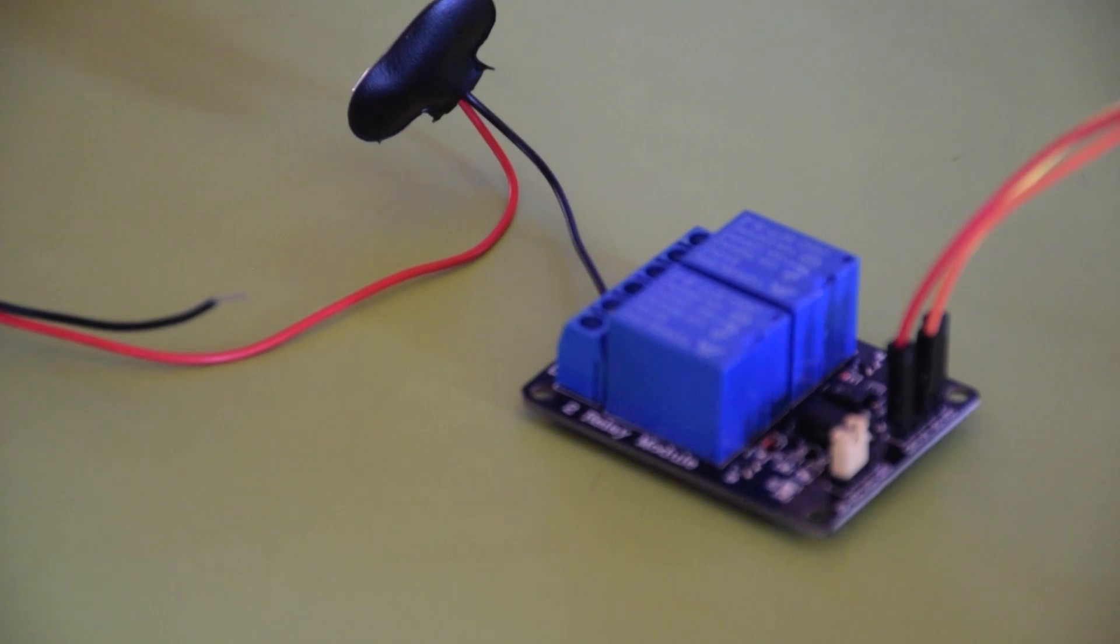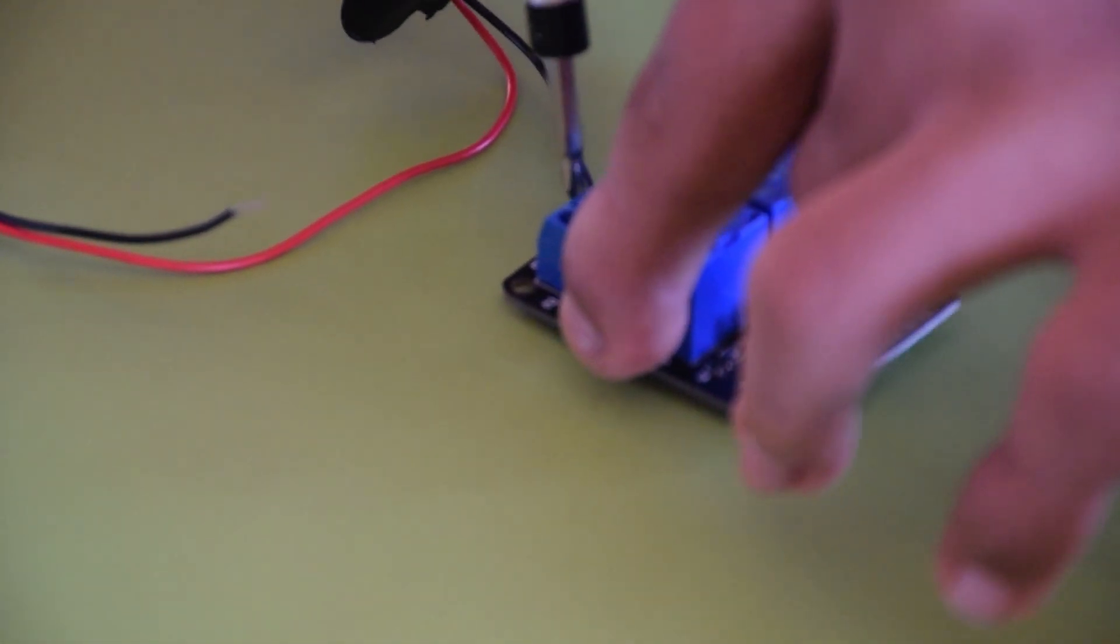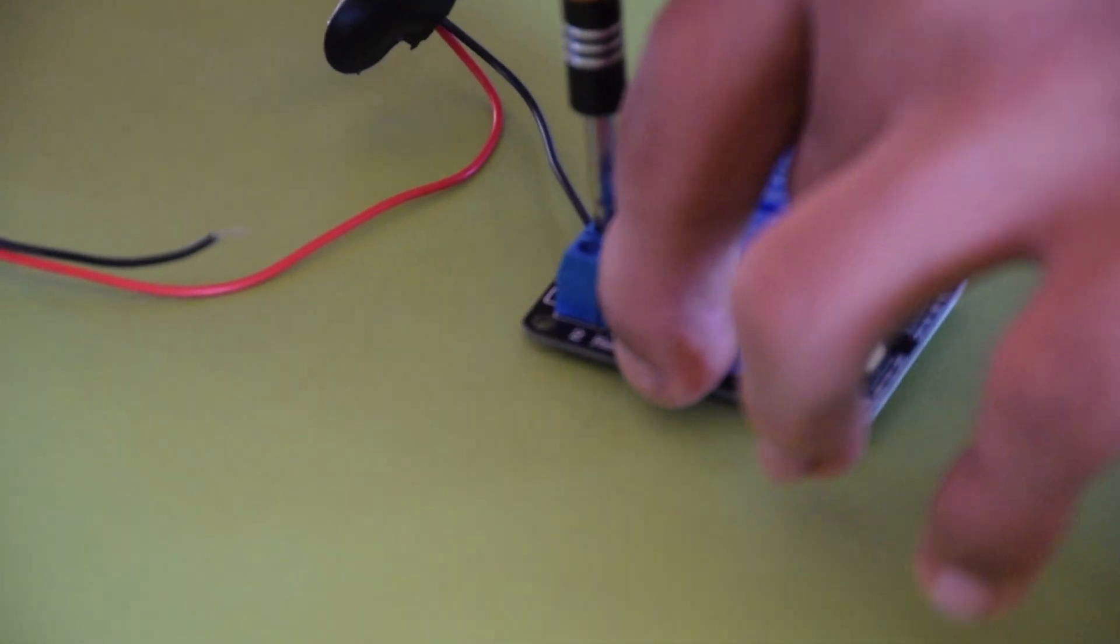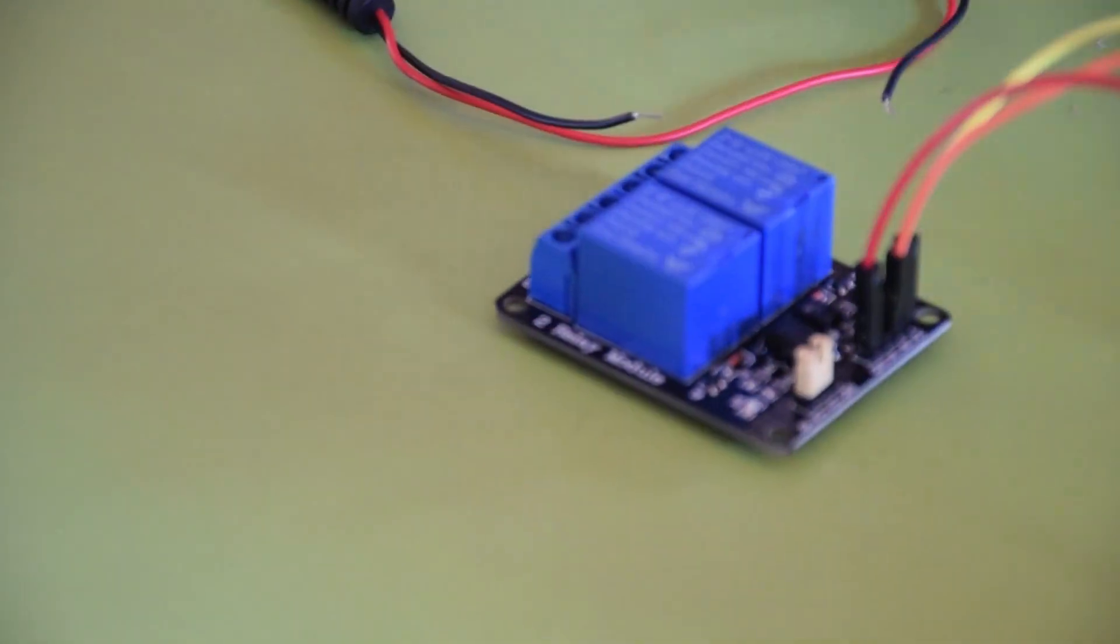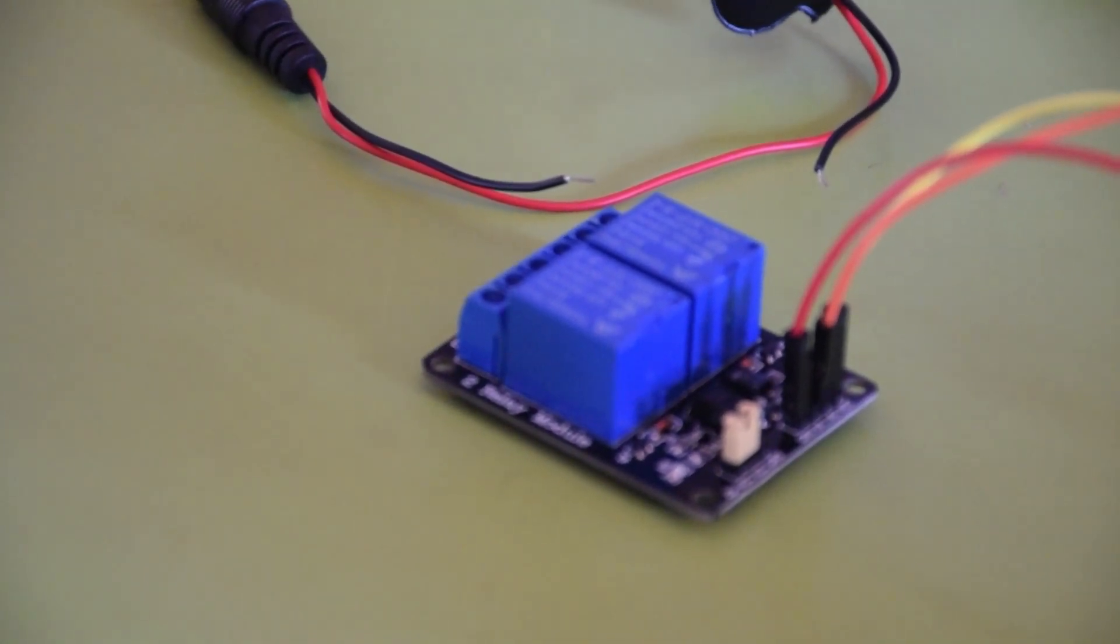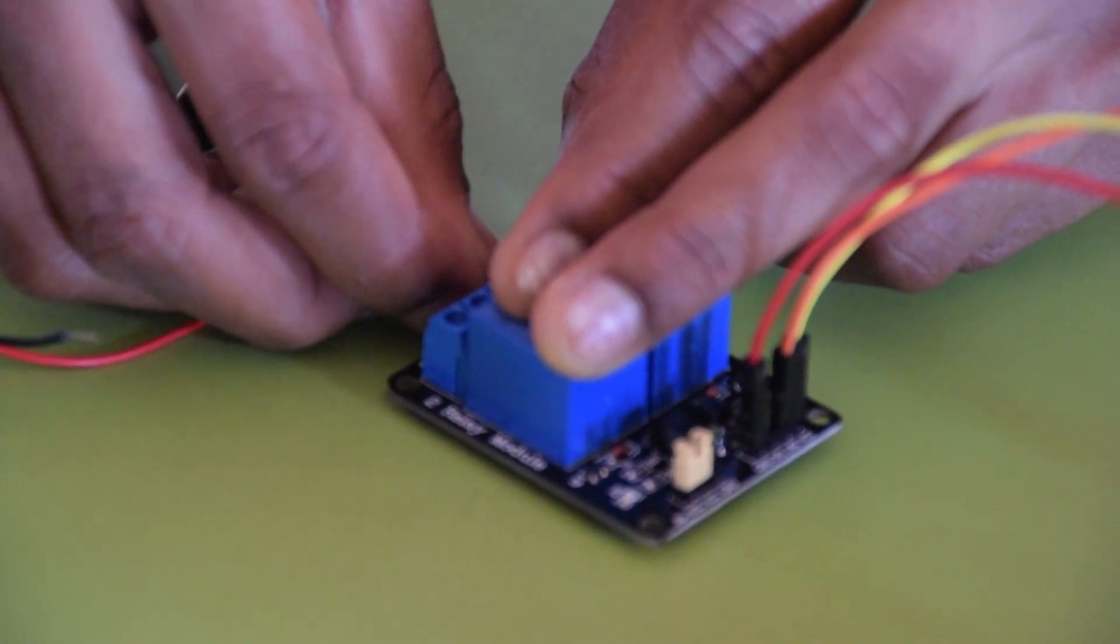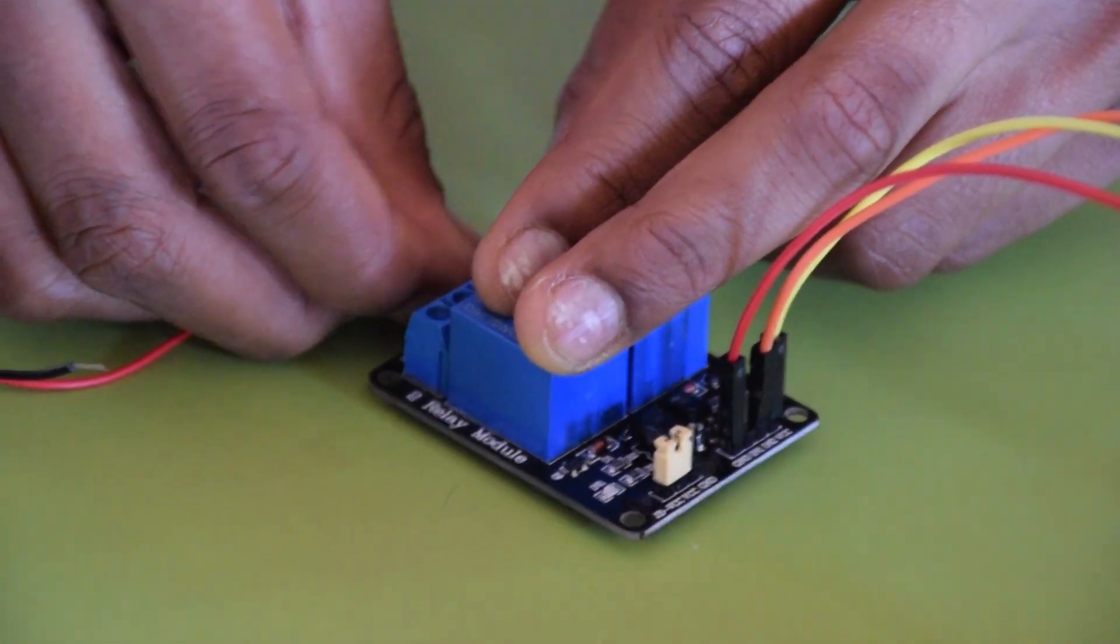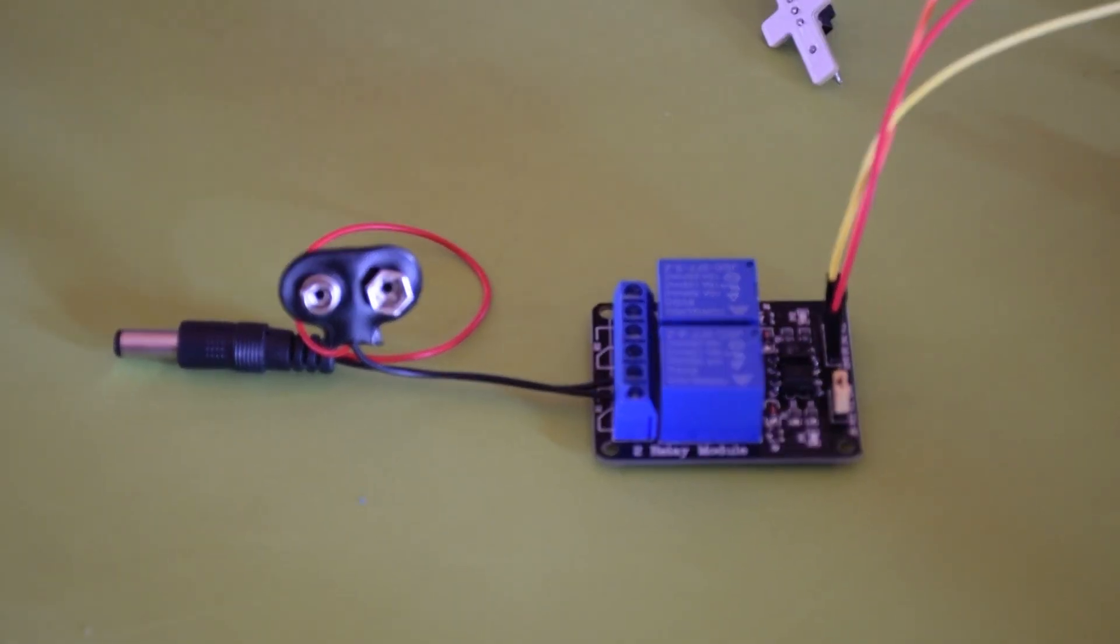Next, we take the other wire and connect it to the common. Now, we have finished connecting the connector to the relay.